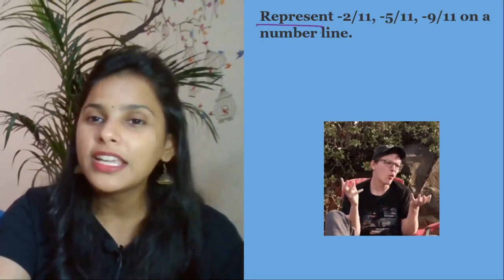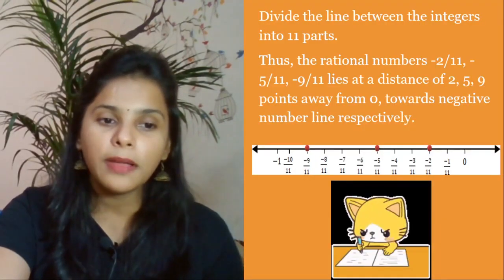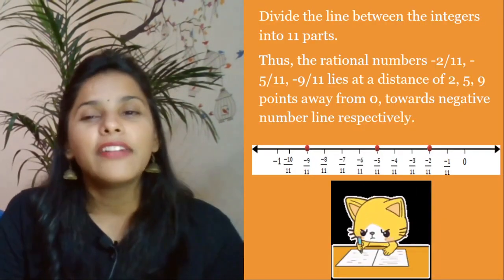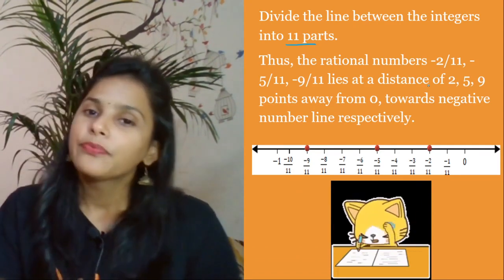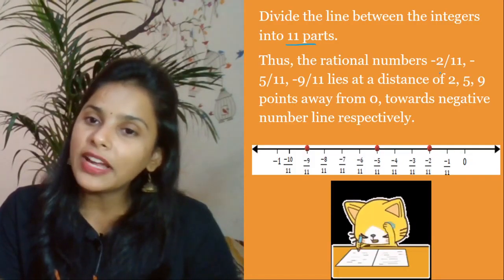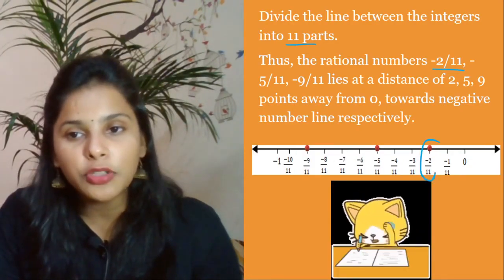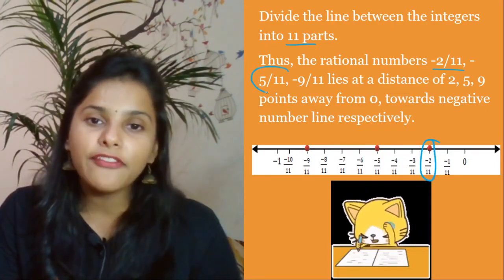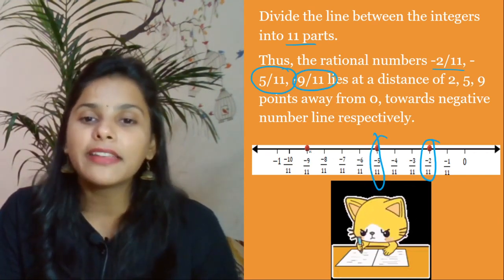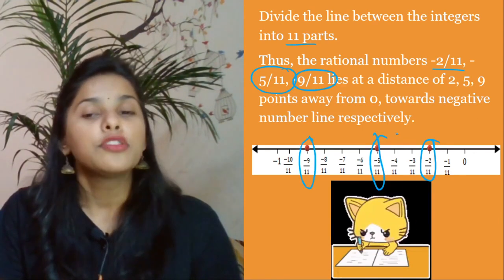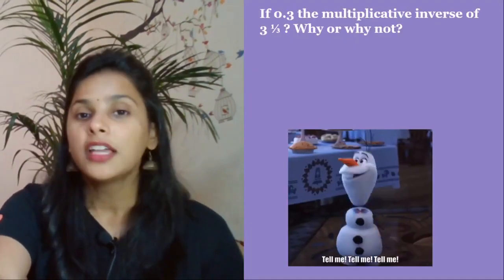Next question: represent those rational numbers on a number line. Divide the number line into 11 parts. The first rational number to define is −2/11, then −5/11, then −9/11. Mark each of these on the number line. That is exactly what you need to represent.